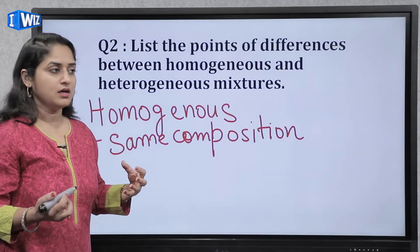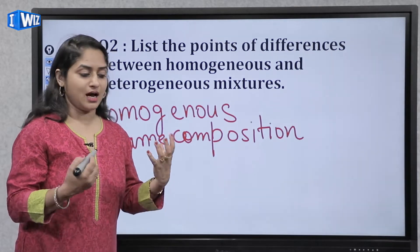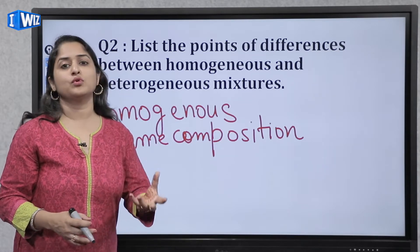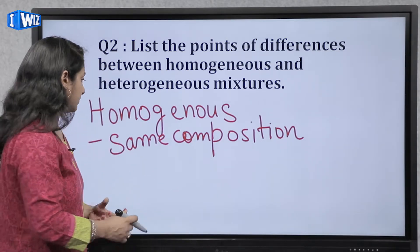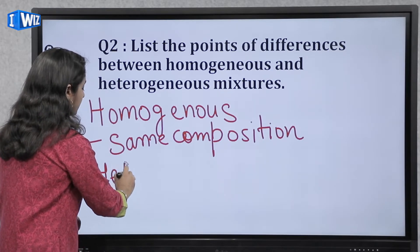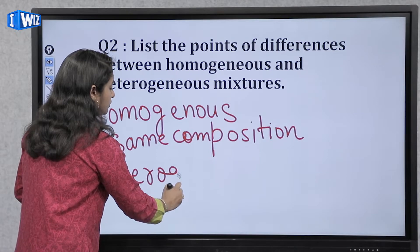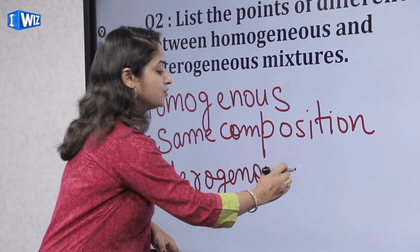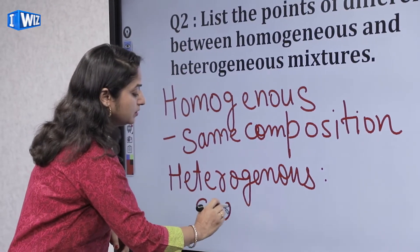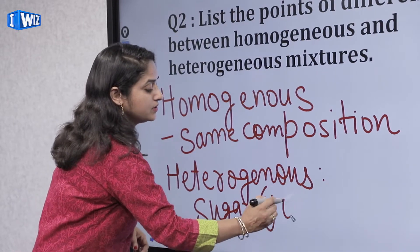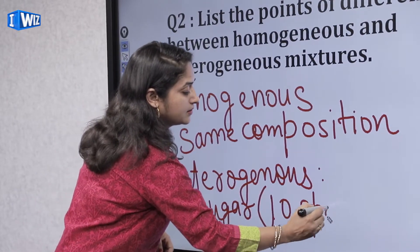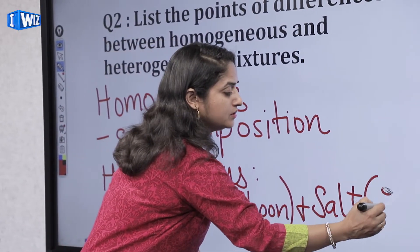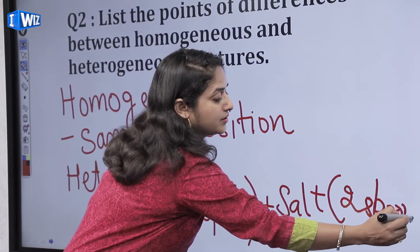Homogeneous solution ka example: jaise aapne ek glass mein salt liya, usko dissolve kiya, toh har sip mein aapko same taste aata hai — that is homogeneous. Aur heterogeneous ka example: agar aapne sugar aur salt ko mix kiya in different quantities, like ten spoons of sugar aur two spoons of salt, toh woh ban jayega heterogeneous mixture.